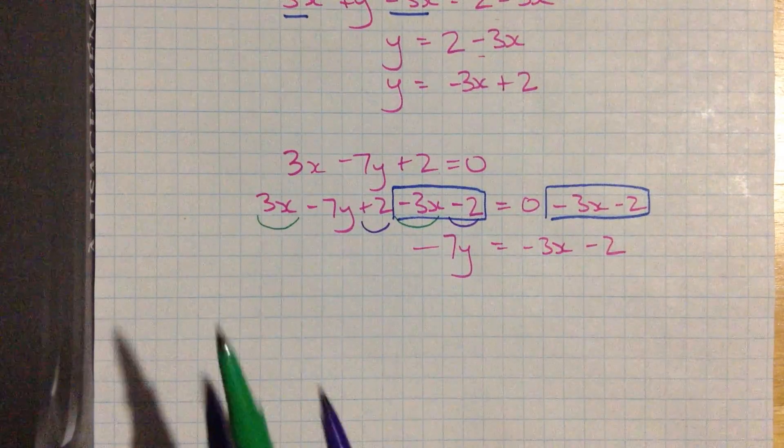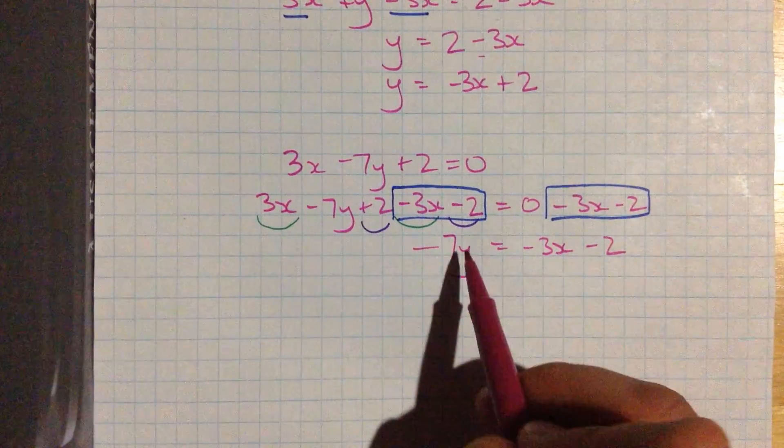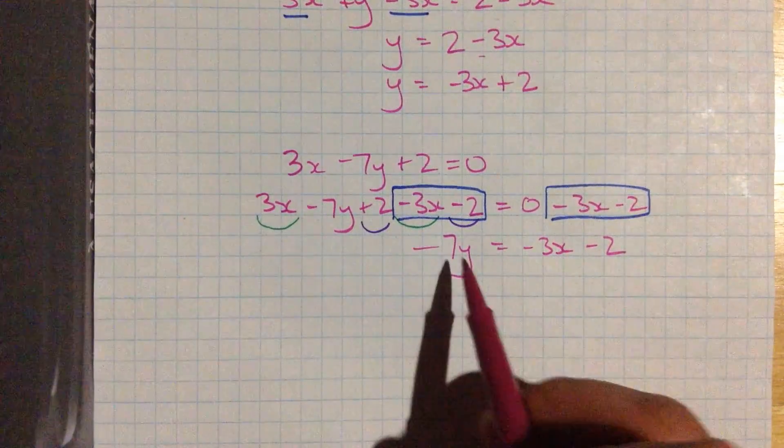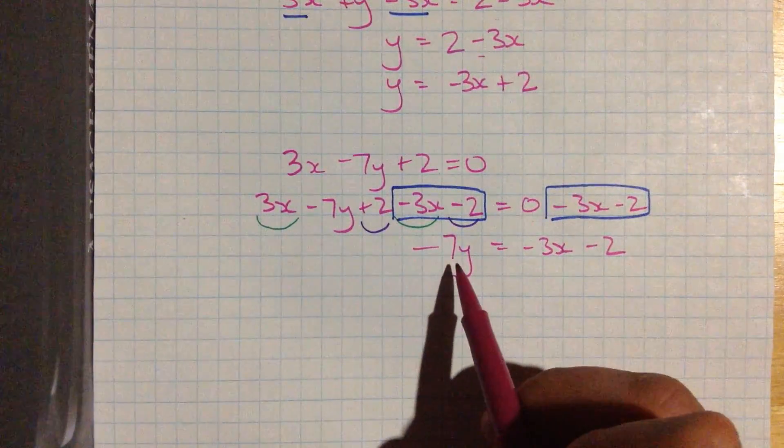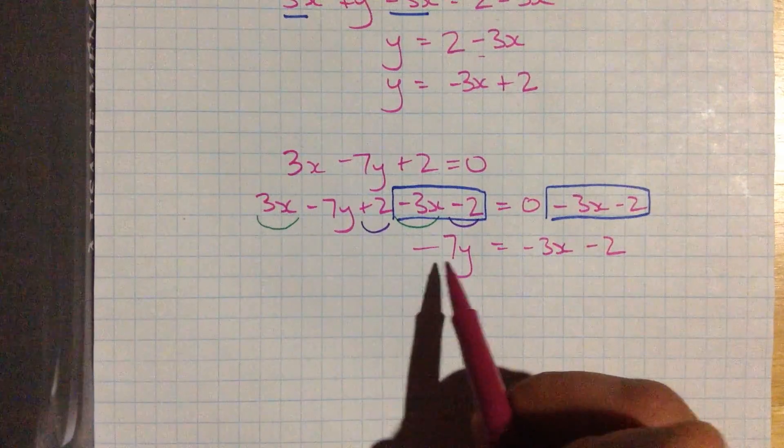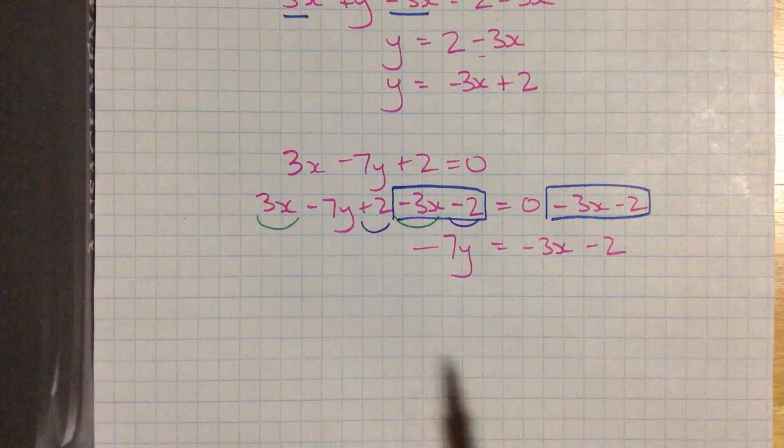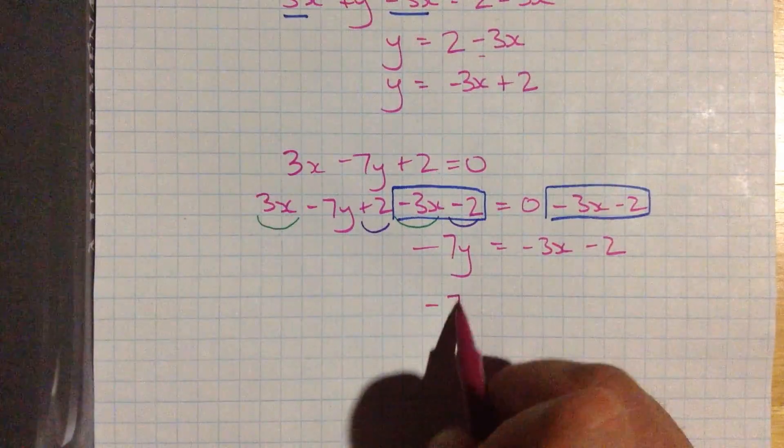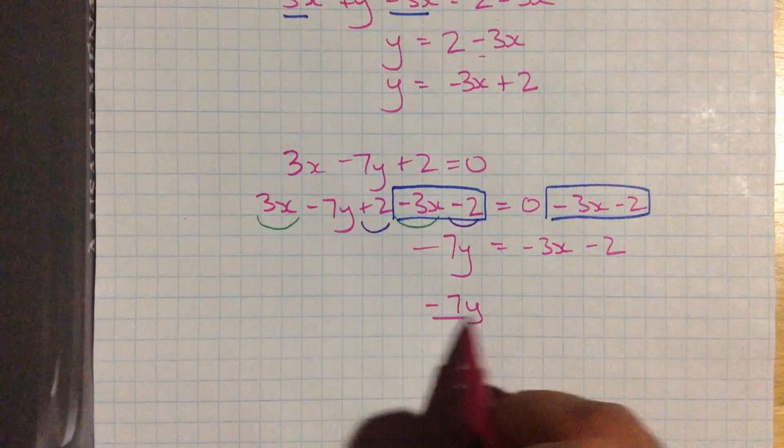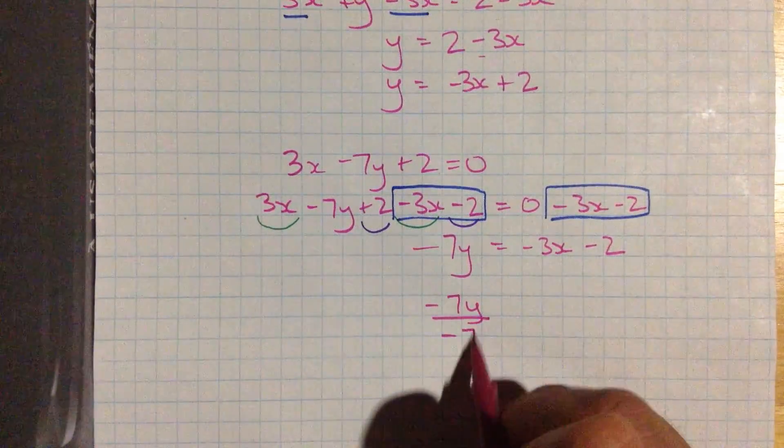Well, we're not quite there yet. We don't have our tidy slope y-intercept form because over here we've got a coefficient, negative 7, attached to the y. We've got negative 7 times y. And we really want y by itself. So to clear that out, we're going to use the inverse operation, the opposite. We're going to divide by negative 7. But we have to do that to both sides of the equation.